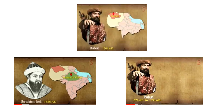In spite of the brave resistance of the Rana, they were defeated in the Battle of Khanwa in 1527. Rana Sangha escaped to Chittor and the grand alliance collapsed. This is all about Babur — in the next class we will study about Humayun.